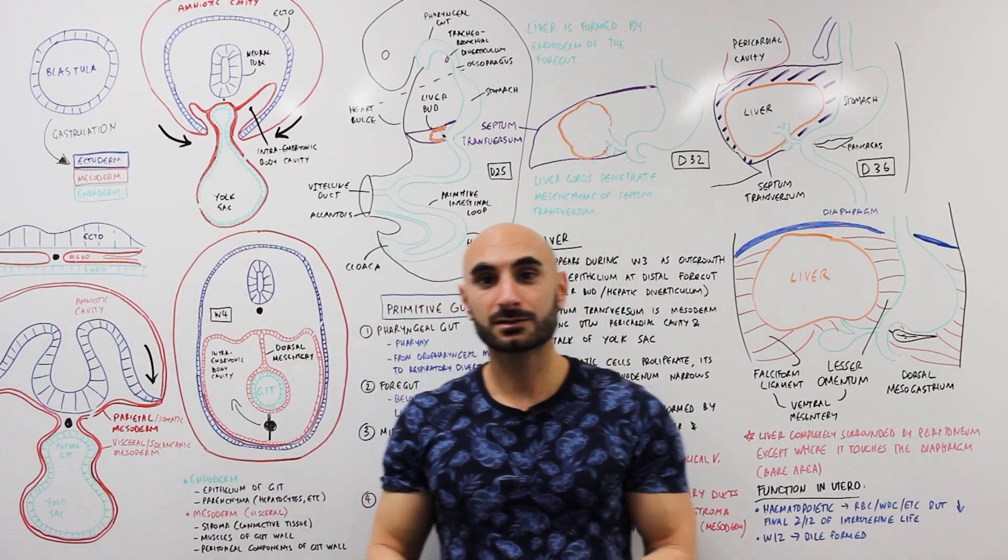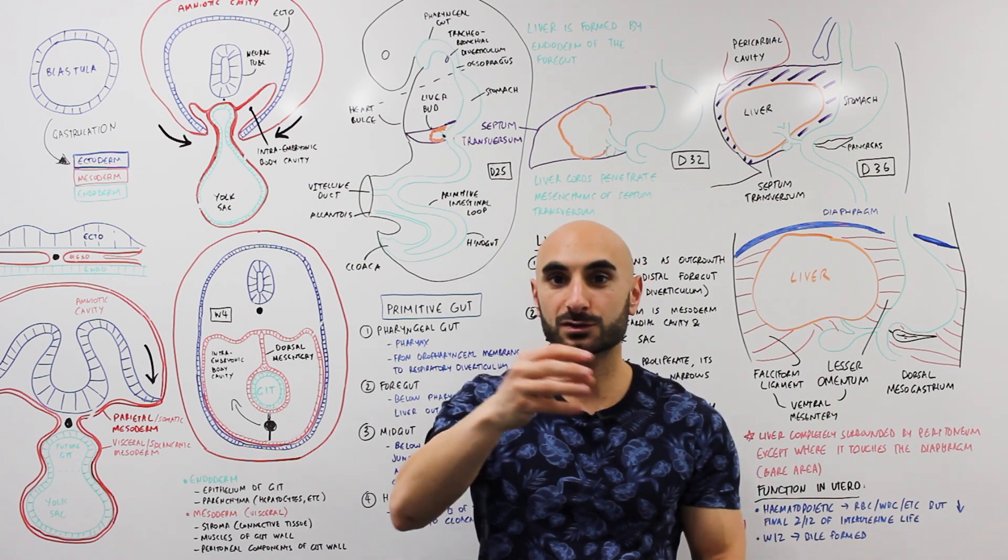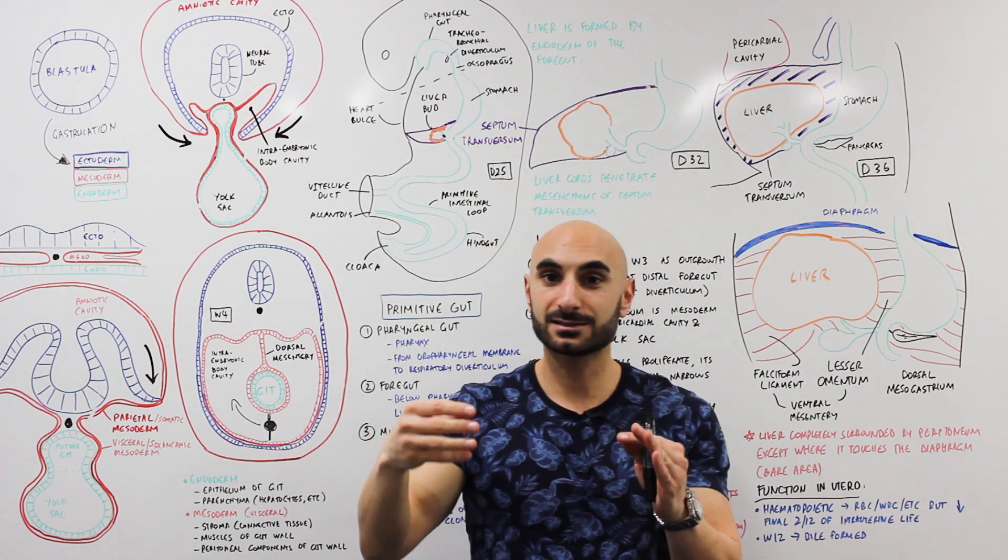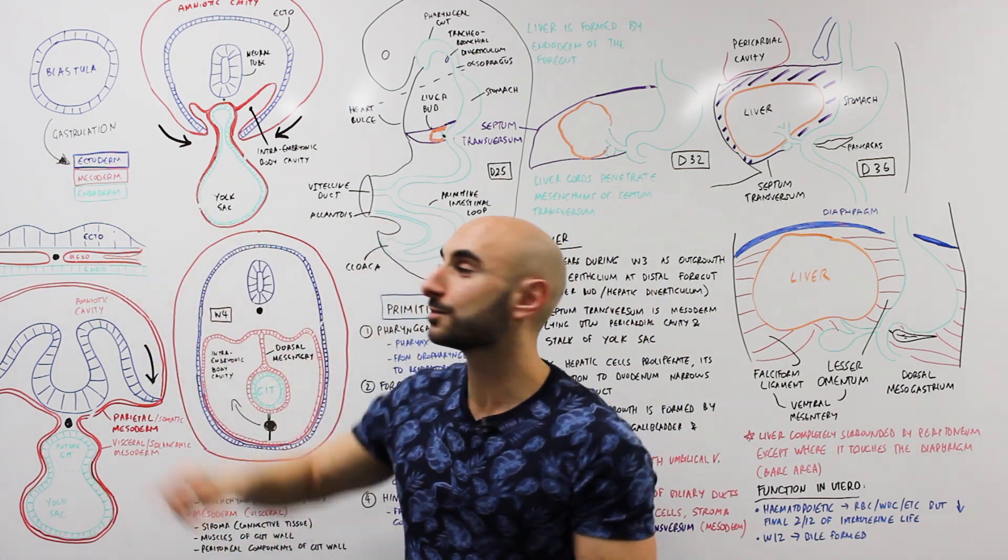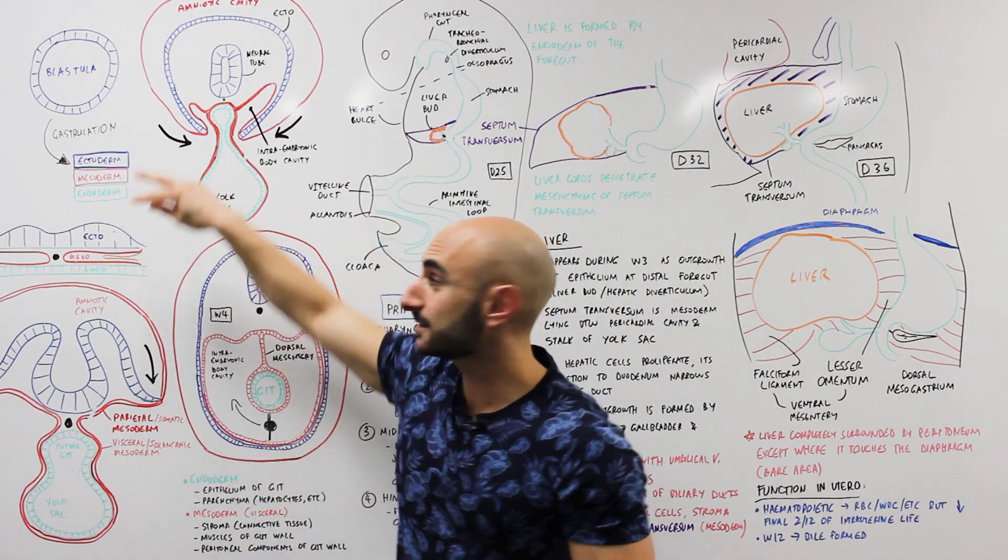The blastula is a ball of cells that's the result of fertilization. It travels down the uterine tube and implants into the uterine wall, and a process of gastrulation will form the three germ layers.